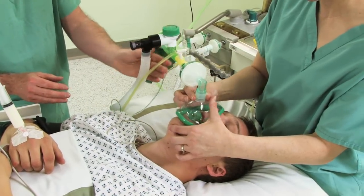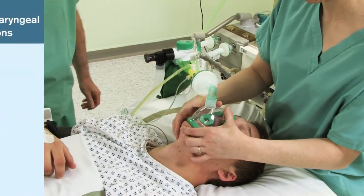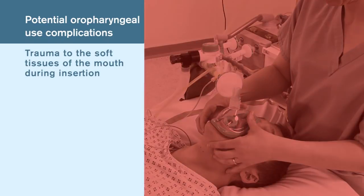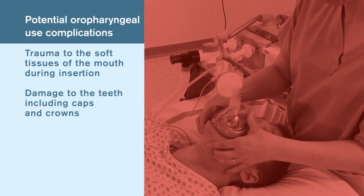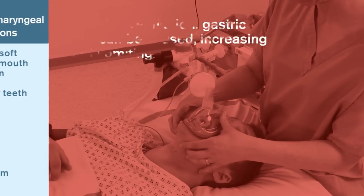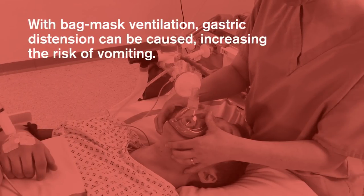Potential complications with the use of oral pharyngeal airways include trauma to the soft tissues of the mouth during insertion, damage to the teeth including caps and crowns, vomiting, gagging and laryngeal spasm. With bag mask ventilation, gastric distension can be caused, increasing the risk of vomiting.